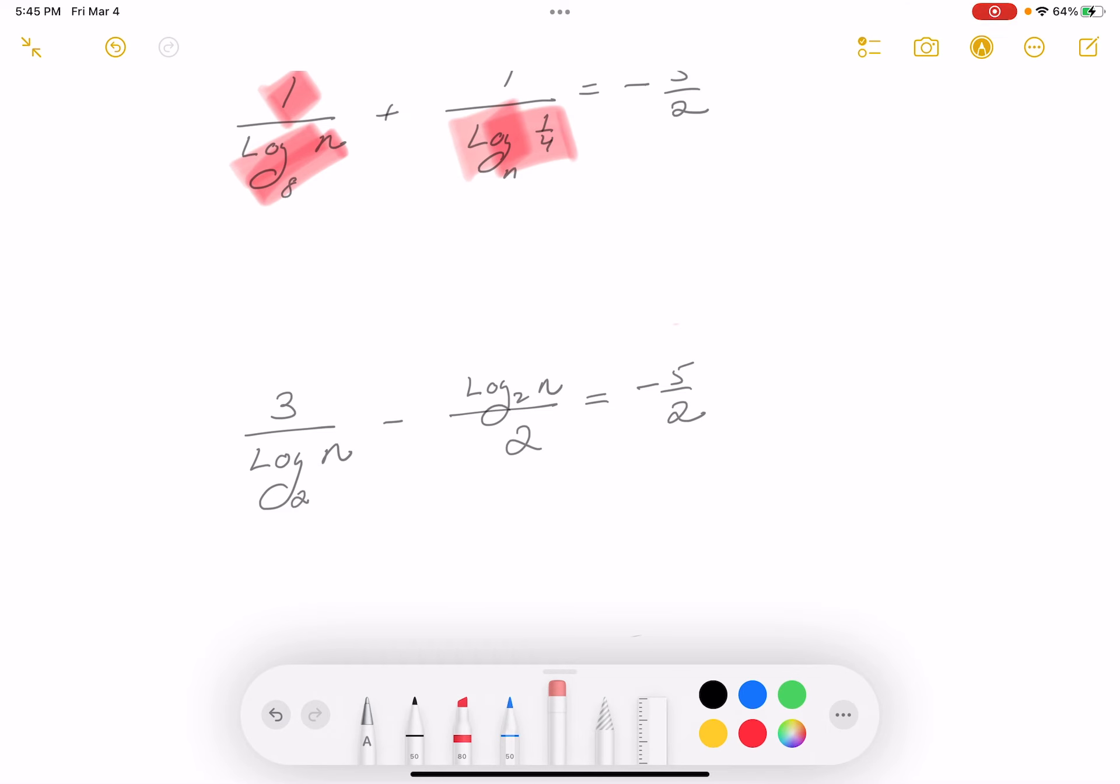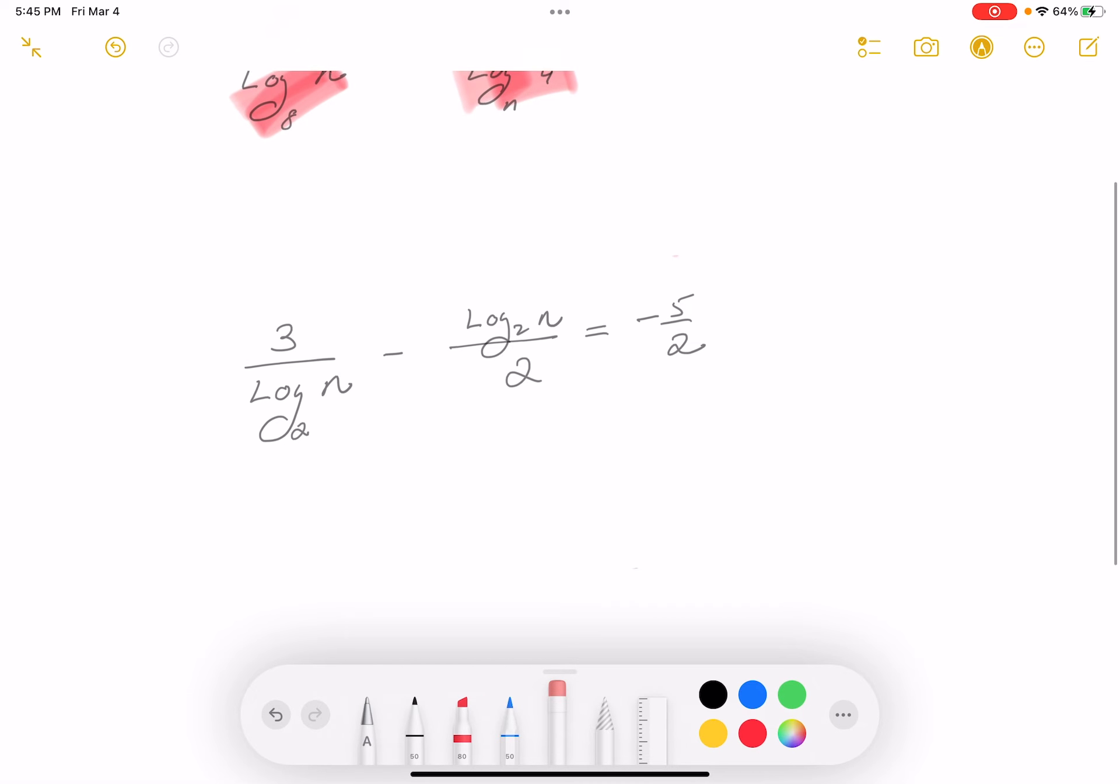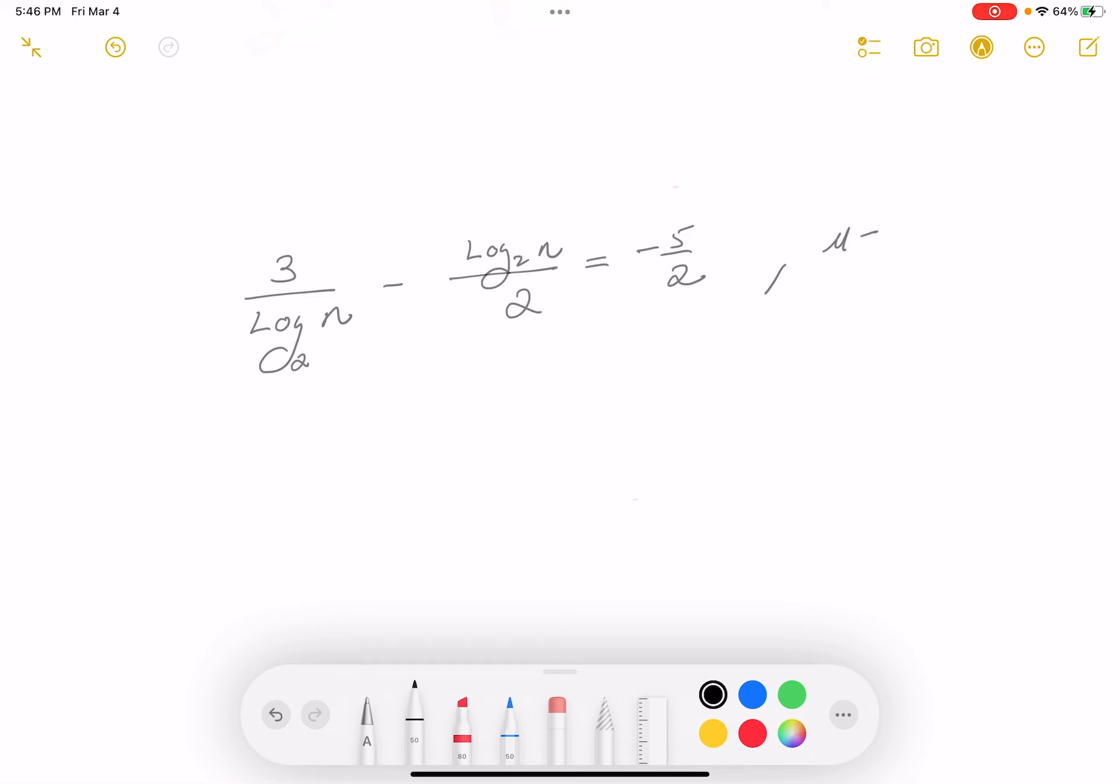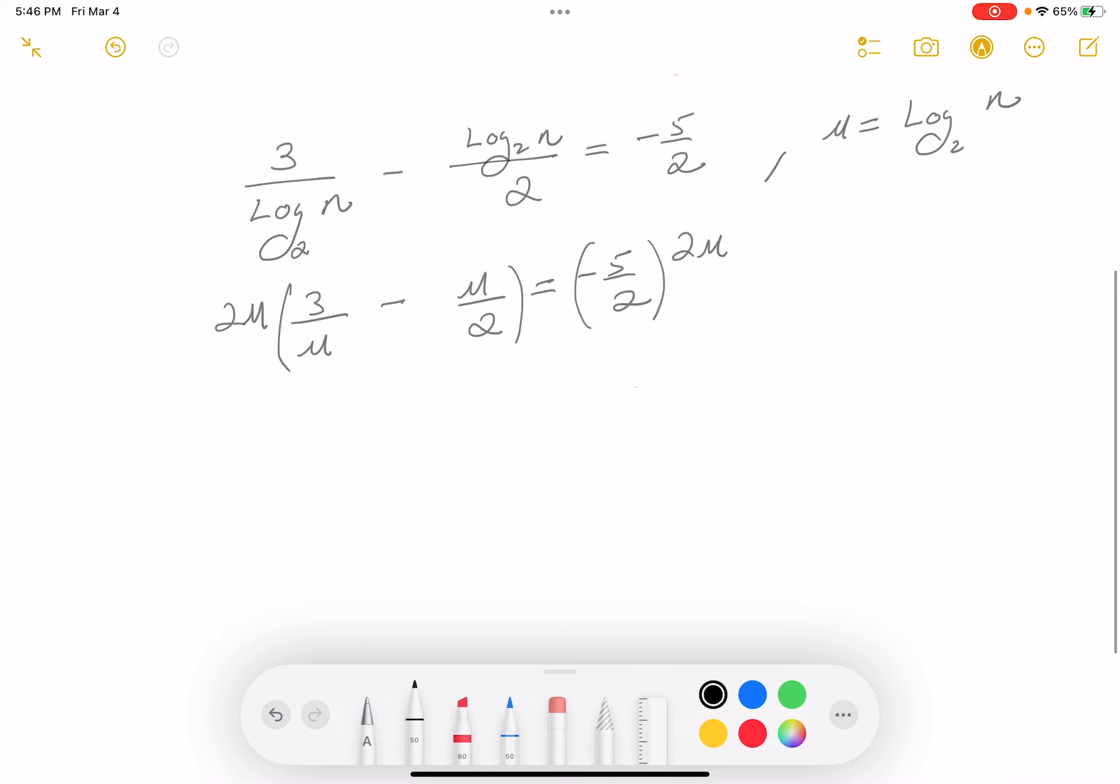Now, it looks kind of complicated, I'll be honest with you. But at least I got something I can make look simpler. And this is something you learned about in Math 119 as well, you make a substitution when you see something difficult. I'm just going to say u equals log base 2 of n. So it's going to be 3 over u minus u over 2 equals minus 5 over 2. And I'm going to multiply both sides of this equation by 2u.